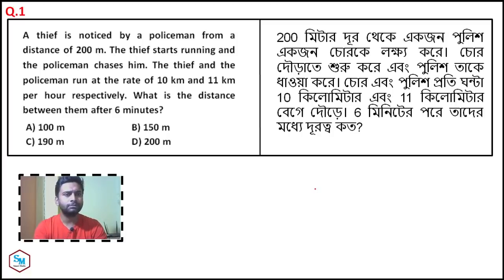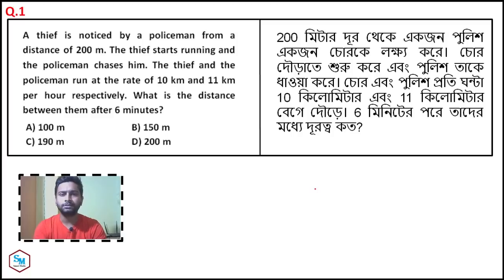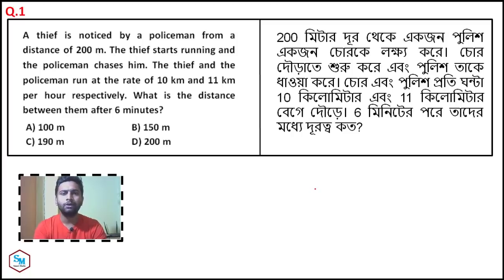Question number 1: A thief is noticed by a policeman from a distance of 200 meters. The thief starts running and the policeman chases him. The thief and the policeman run at the rate of 10 km per hour and 11 km per hour respectively. What is the distance between them after 6 minutes?